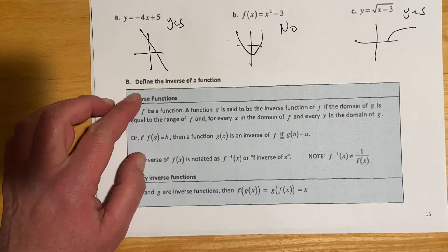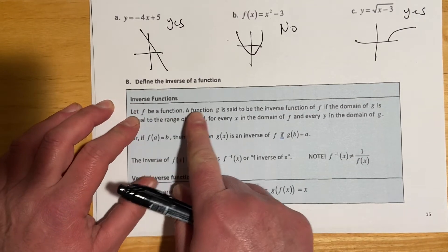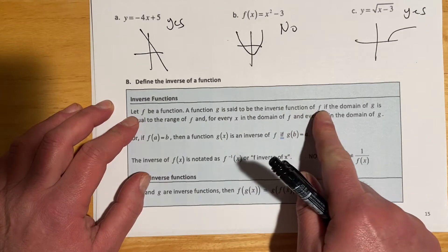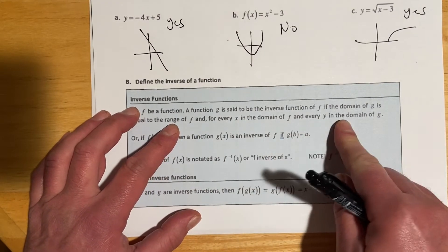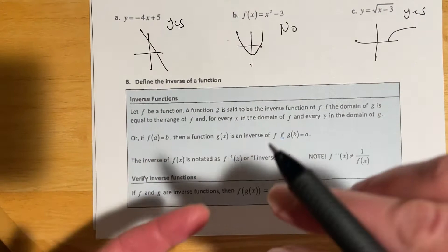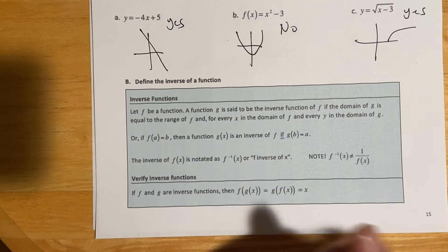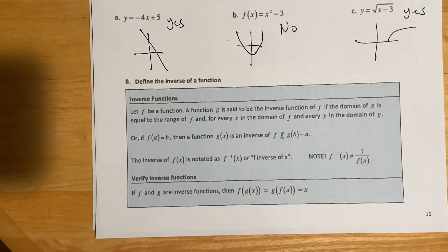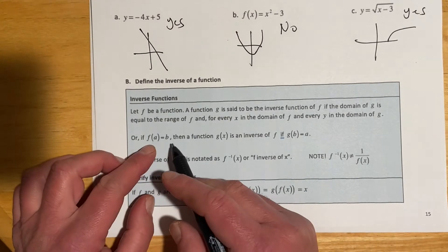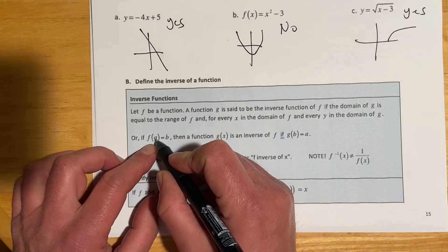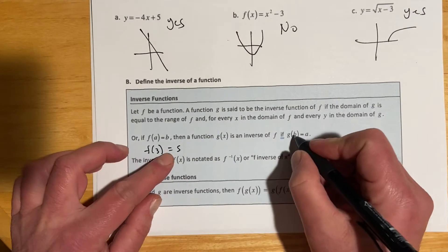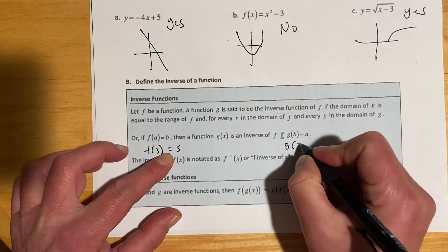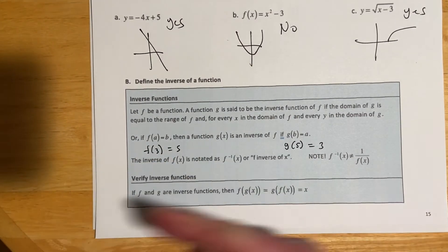Moving on to the definition of an inverse function. Let f be a function. A function g is said to be the inverse of f if the domain of g is equal to the range of f, and for every x in the domain of f and every y in the domain of g. The idea is they're going to have the exact same and opposite domains and ranges. The domain of the original is the range of the inverse, and likewise the range of the original is the domain of the inverse. If I put f of 3 and I got 5, when I put that 5 back into g, which is the inverse, it's going to come back out 3. The x's and y's are swapping places.